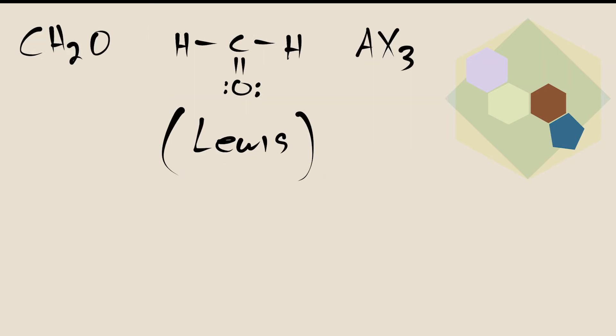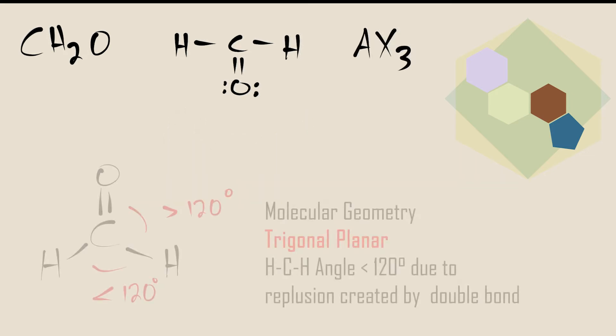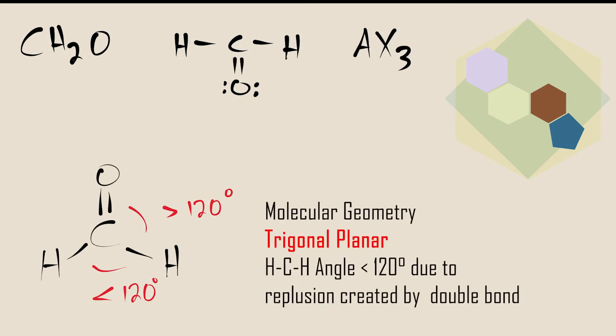Shown here is formaldehyde, another AX3 molecule. A static double bond can cause deviation from an ideal angle because the double bond, with its greater electron density, repels the two single bonds more strongly than they repel each other.